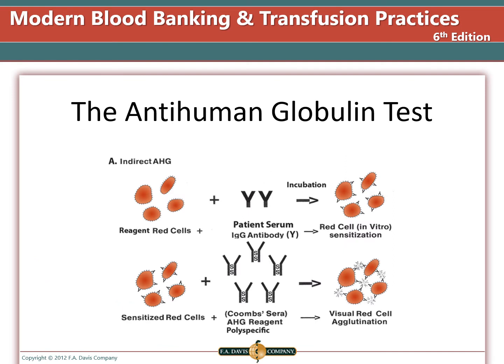The indirect antiglobulin test is used for antibody screens and antigen typing. For the antibody screen, known reagent blood cells with patient plasma are combined, incubated, washed, and AHG is added, then centrifuged and visualized for agglutination. For antigen typing, you would use the patient red cells with reagent antisera to a specific antigen of interest, but otherwise the steps would be the same.